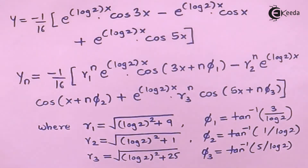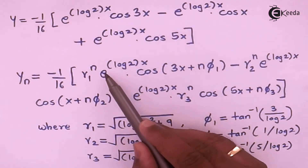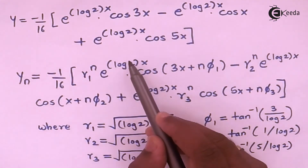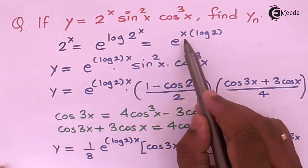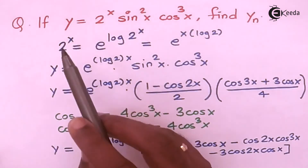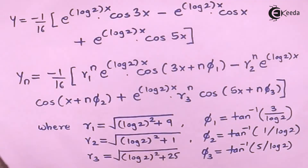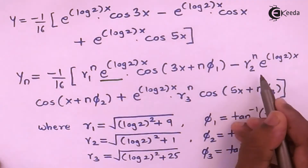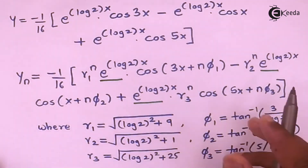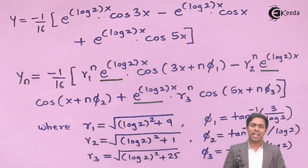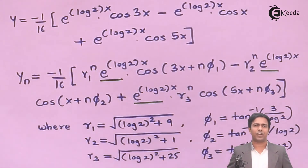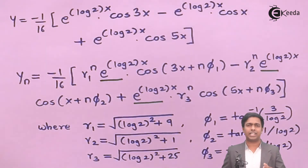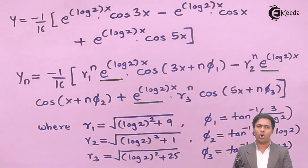That is the answer. We can write one more step by replacing e to the power log 2 times x back as 2 raised to x, since that is where this term came from. In the final answer, substitute 2 raised to x for each occurrence of e to the power log 2 times x, while the remaining terms stay the same. That is the nth derivative of the given transcendental function. Keep watching the videos because in the next video I will cover a few more numericals on successive differentiation. Thank you very much.